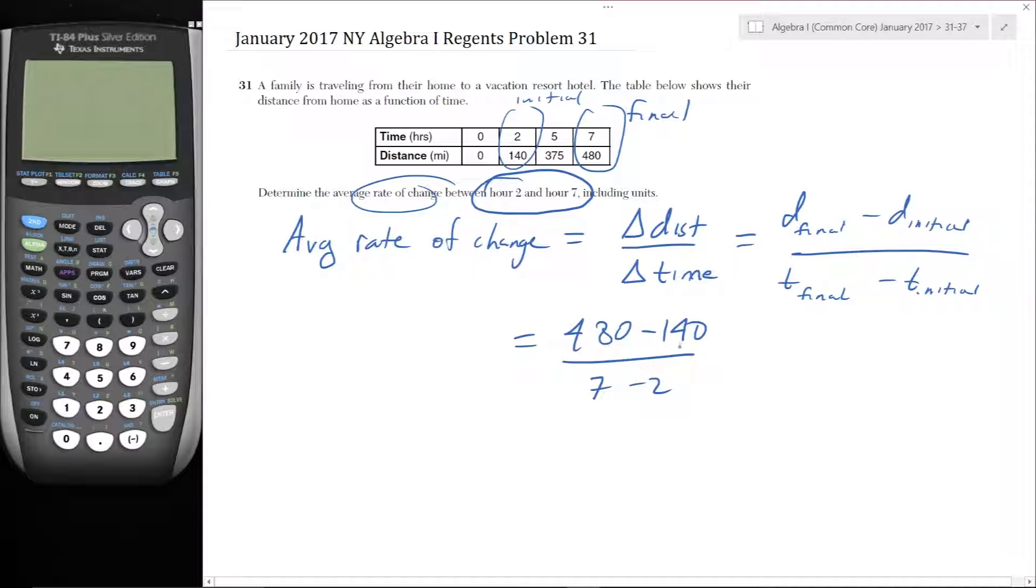So 480 minus 140 could be gotten without even a calculator. 4 minus 1 is 3, 8 minus 4 is 4, 0 minus 0 is 0. Divided by 7 minus 2 is 5. And so 340 divided by 5 is the same thing as 680 divided by 10, which is 68 miles per hour.